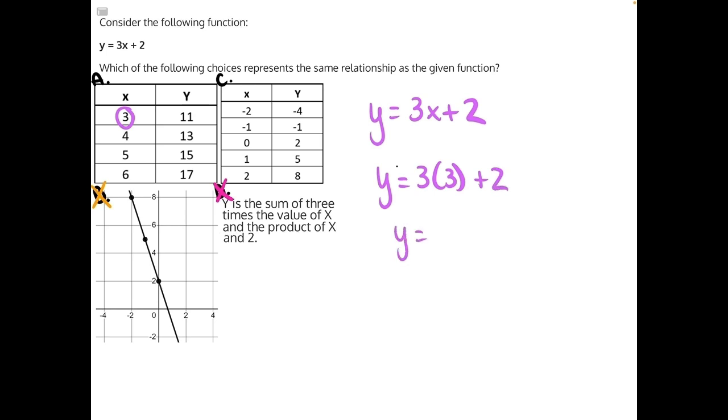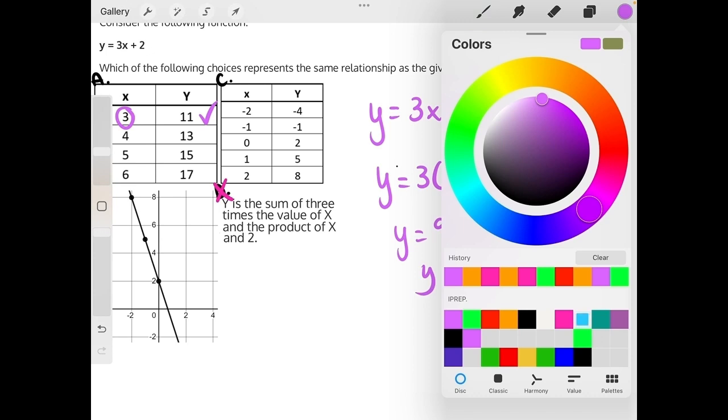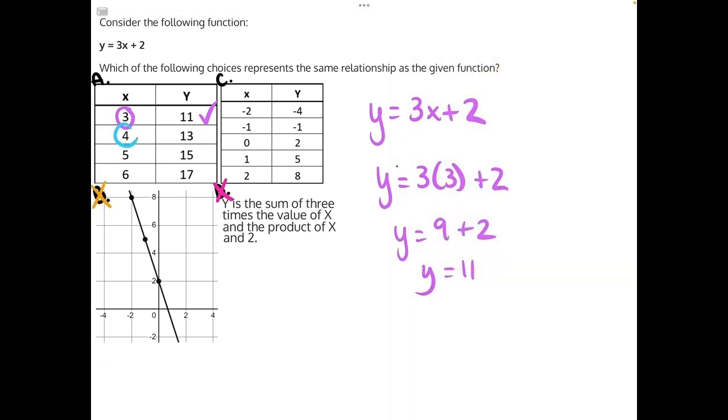y is equal to 3 times 3 is 9, plus 2 is indeed equal to 11. So far, so good. I'll grab a new color. And now we'll plug in 4. So we will have y is equal to 3 times 4, plus 2.